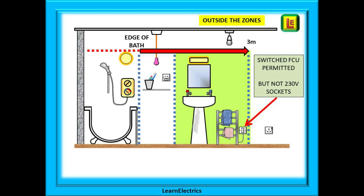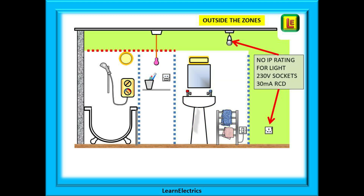230 volt sockets are not permitted in the area less than 3 metres from the edge of the bath. Once we move more than 3 metres from the edge of the bath, 230 volt sockets are permitted but must be 30 milliamps RCD protected. The ceiling light does not need to be IP rated, as all parts of it are outside zones 0, 1, or 2.